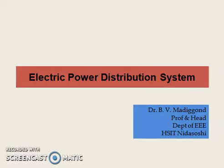Students, we will start the fifth module which is electrical power distribution system. We know that electrical energy is produced at the generating station and the power that has been produced has to be conveyed to the consumers, and how it is being conveyed — through the transmission system, or we can say transmission and distribution system. We have discussed in the first module how transmission and distribution takes place, at what voltage level the power transmission takes place, at what voltage level transmission takes place.